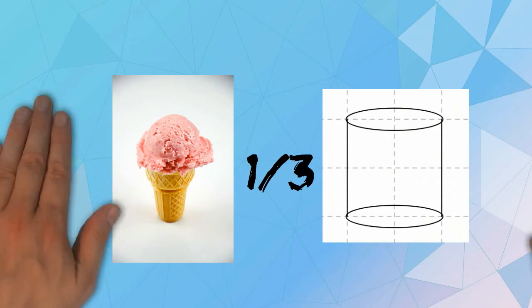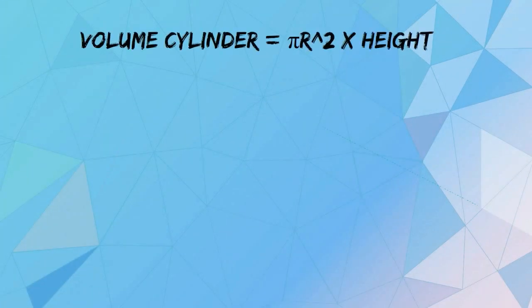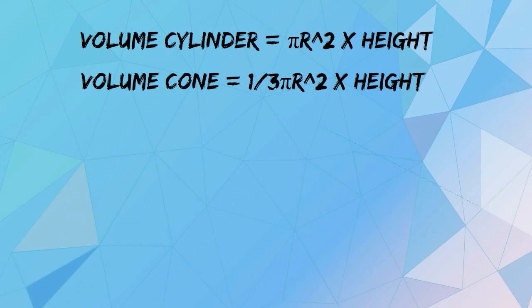The volume of a cylinder is equal to pi times radius squared times the height. The volume of a cone equals one-third pi times radius squared times the height.